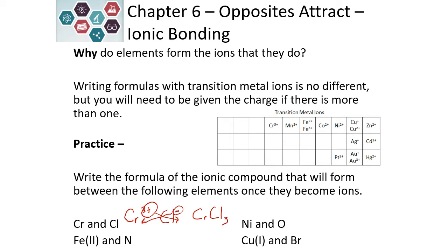If we look at iron(II) and nitrogen, the parentheses tell us that it's a plus two charge on the iron. Nitrogen's position tells us it's a minus three. So our formula would be Fe₃N₂. This cannot be reduced any further, so this method of cross-multiplying works.